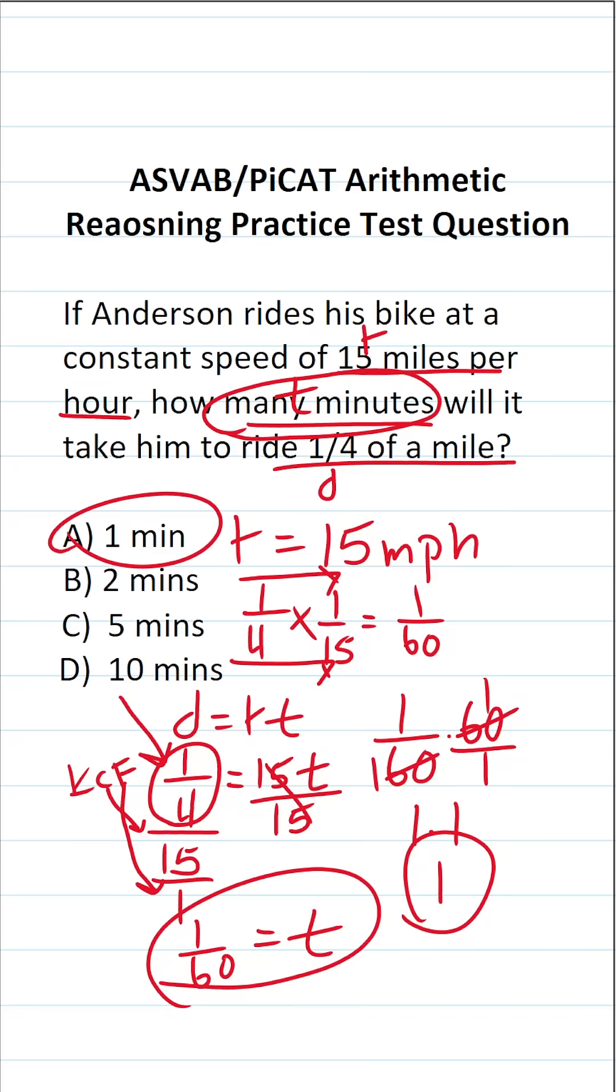In other words, it's going to take Anderson 1 minute at 15 miles per hour to cover that quarter of a mile.